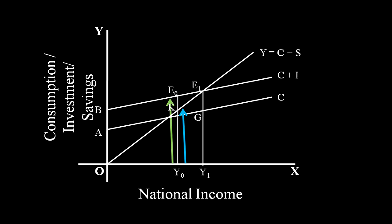Moreover, the community wants to spend Y0D on consumption and save DK, whereas the business community plans to invest DE0. Planned investment exceeds planned savings by KE0.